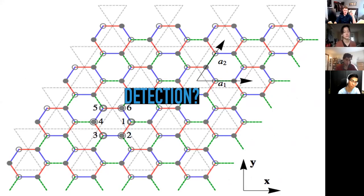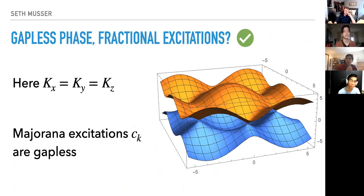What about detection? Spin liquids are hard to detect because they have all this non-local information. Can we find some sort of local killer signature that would let us know we have a Kitaev spin liquid? To do that we're going to consider the gapless phase — K_x equals K_y equals K_z — and we fill up the lower band with no gap to exciting Majoranas.